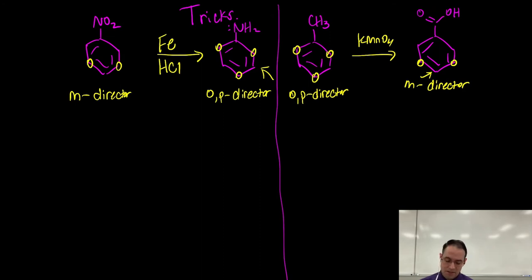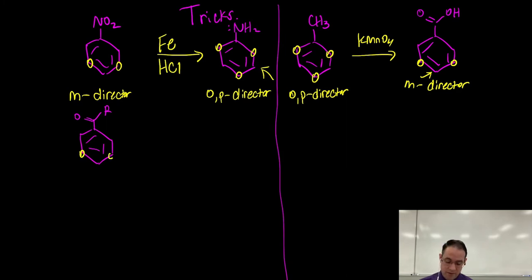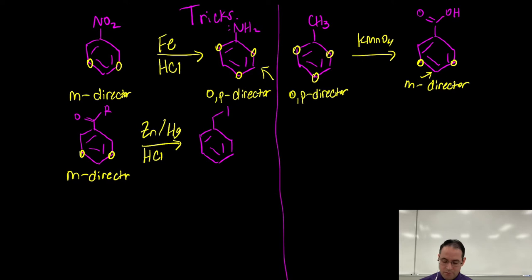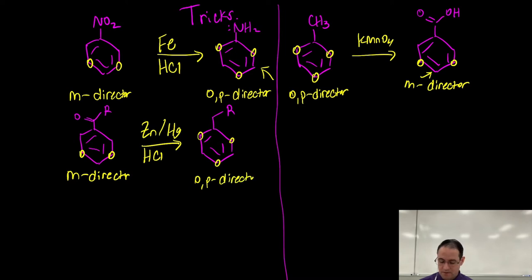Another reaction commonly encountered involves an acyl group. Remember that because we have this carbon-oxygen pi bond right next to the aromatic ring, this makes it an electron-withdrawing group — a meta-director. Now if we reduce that with zinc-mercury amalgam and hydrochloric acid, we can make an ordinary alkyl group, and alkyl groups are ortho-para directing. That's something to be aware of.